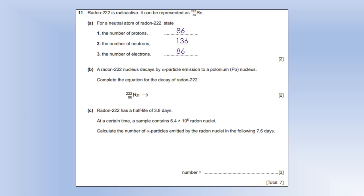Radon 222 nucleus decays by alpha particle emission to polonium, PO. Complete the equation for the decay. So alpha decay produces a helium nucleus, which is 2 neutrons and 2 protons. So what we have to do is decrease the nucleon number by 4 and decrease the proton number by 2, as you can see.